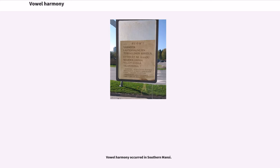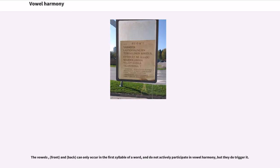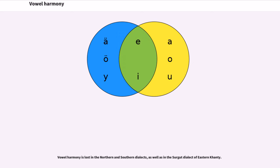Vowel harmony occurred in Southern Mansi. In the Khanty language, vowel harmony occurs in the Eastern dialects and affects both inflectional and derivational suffixes. The Vasyugan dialect has a particularly extensive system of vowel harmony, with seven different front-back pairs. Some vowels can only occur in the first syllable of the word and do not actively participate in vowel harmony but do trigger it. Vowel harmony is lost in the northern and southern dialects, as well as in the Surgut dialect of Eastern Khanty.